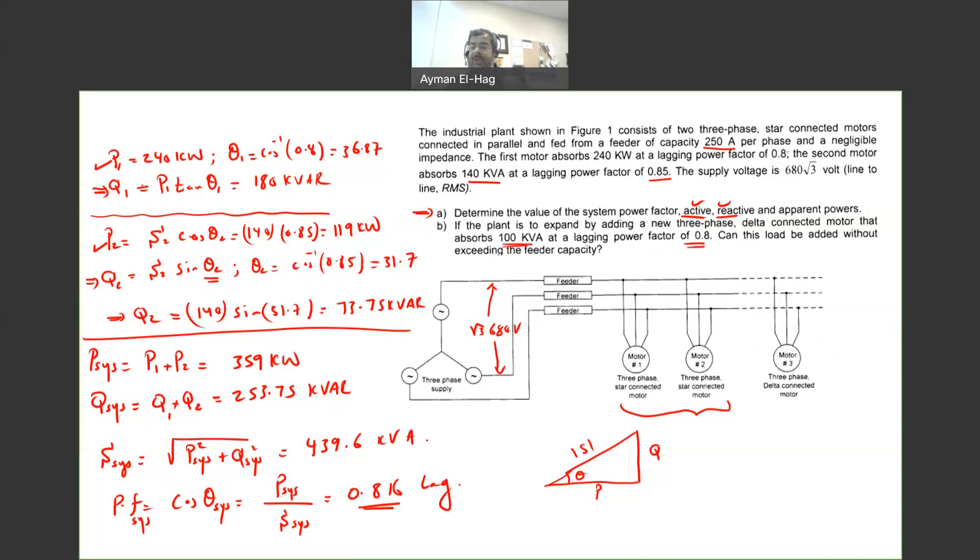Can this load be added without exceeding the feeder capacity? Okay, so in this question, we want to find what is the total I, I line here of the system after adding this new load.